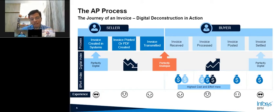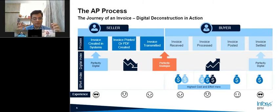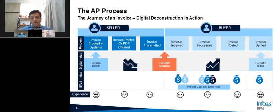This digital document is then printed out into paper or a PDF, attached, and transmitted either through the post or through email. At this point, we describe it as a perfectly analog state — a completely digital document has been transformed into a perfectly analog state. Here we come in as accounts payable experts, trying to get this back into a digital format. We receive it, spend enormous amounts of money and effort transforming it back into a digital format, process it, and then it gets paid.